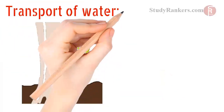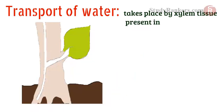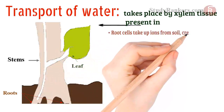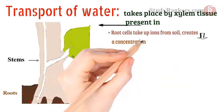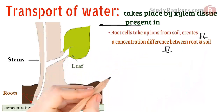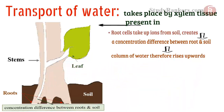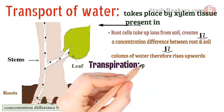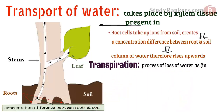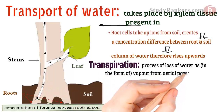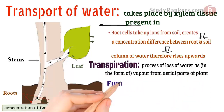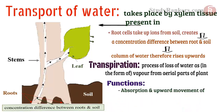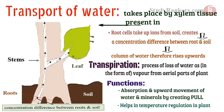Transport of water takes place by xylem tissue present in root, stems and leaves, which are therefore interconnected. Root cells take up ions from the soil which create a concentration difference between root and soil. A column of water therefore rises upward. Transpiration is the process of loss of water in the form of vapor from aerial parts of the plant. Its function involves absorption and upward movement of water and minerals by creating pull, and helps in temperature regulation in plants.